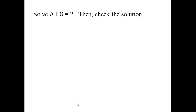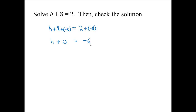How do we solve an equation? We want to solve h plus 8 equals 2. Since 8 is added to h, we are going to add the opposite of 8 — which is negative 8 — to both sides of the equation. So we have h plus 8 plus negative 8 equals 2 plus negative 8. Now 8 plus negative 8 gives us 0, so we have h plus 0 equals negative 6, which simplifies to h equals negative 6. That is the solution.